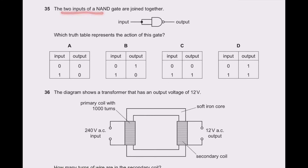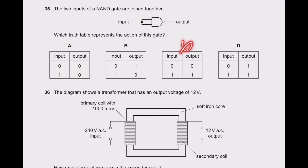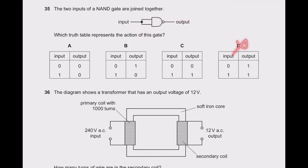Question 35: two inputs of a NOT-AND (NAND) gate are joined together. If input is 0, AND gate gives 0, then NOT reverses to give 1 — so 0 input gives 1 output. If input is 1, AND gate gives 1, then NOT reverses to give 0. So input 0 → output 1, and input 1 → output 0. Option B is the right answer.